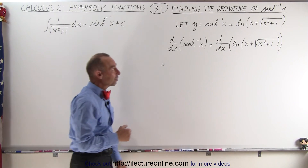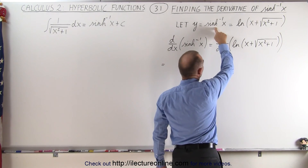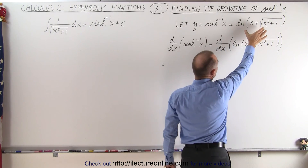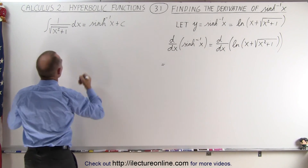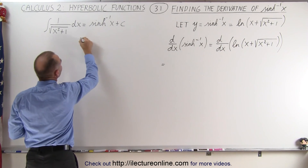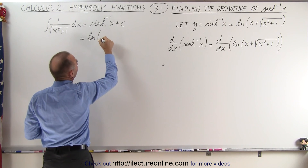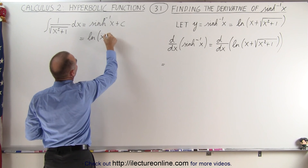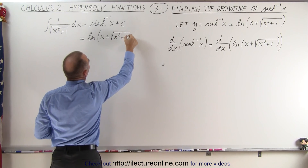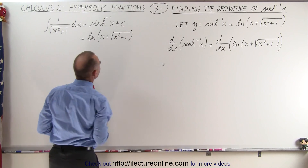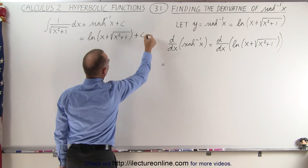Since, as we saw in some previous videos, the inverse hyperbolic sine of x can be equal to the natural log of x plus the square root of x squared plus 1, plus the constant of integration.